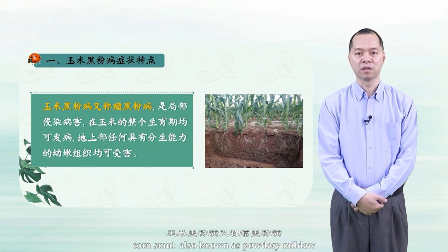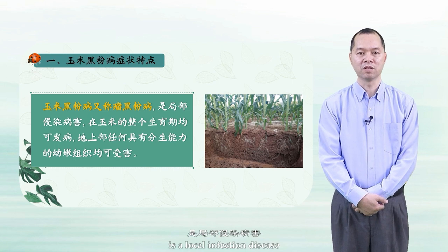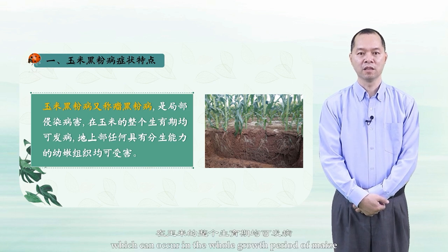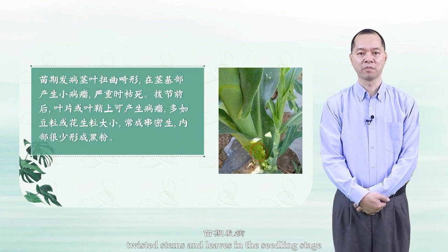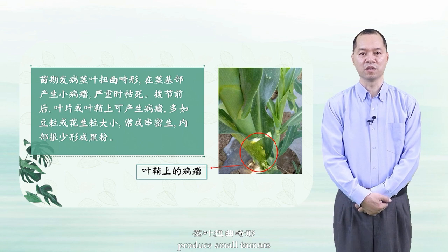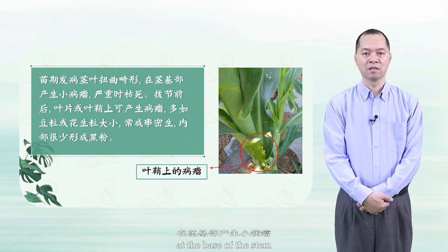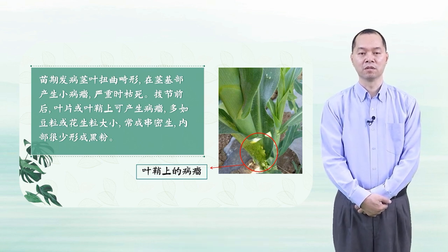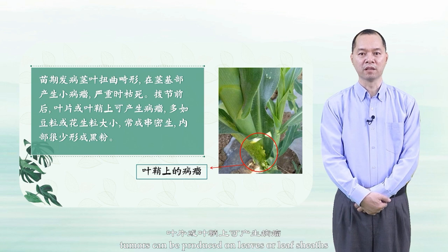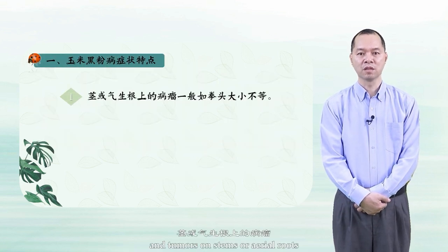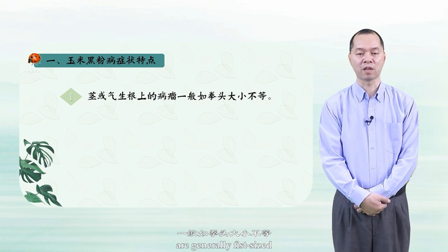Corn smut, also known as powdery mildew, is a local infection disease which can occur in the whole growth period of maize. Twisted stems and leaves in the seedling stage produce small tumors at the base of the stem and die in severe cases. Before and after tasseling, tumors can be produced on leaves or leaf sheaths, and tumors on stems or aerial roots are generally fist-sized.